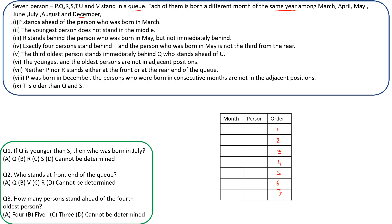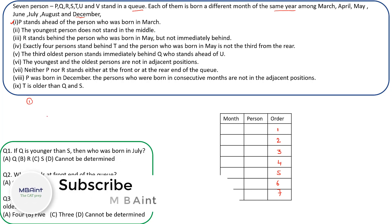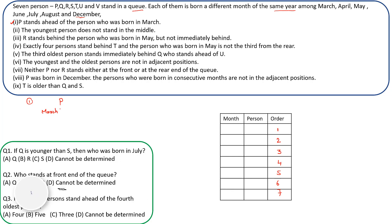The first clue says P stands ahead of the person born in March — not immediately ahead. So we are not forming a block here; we simply note that P will appear before March in the queue, with at least one person in between.